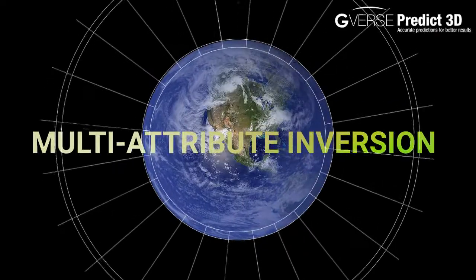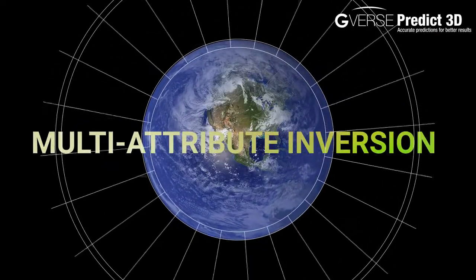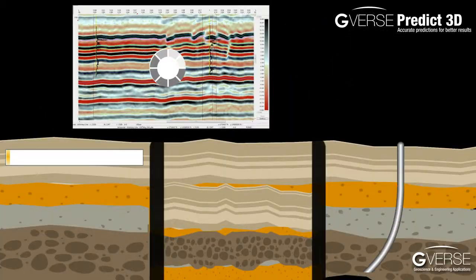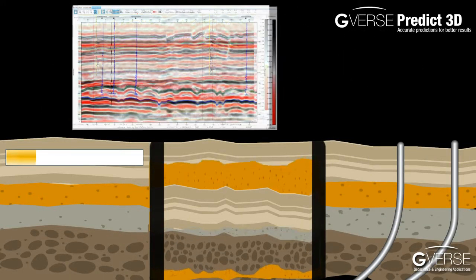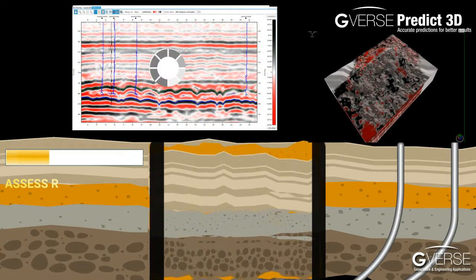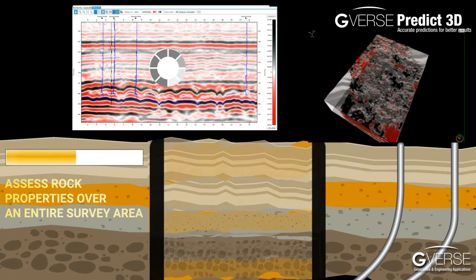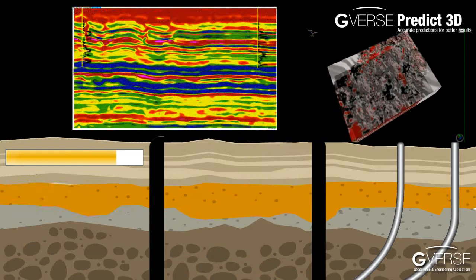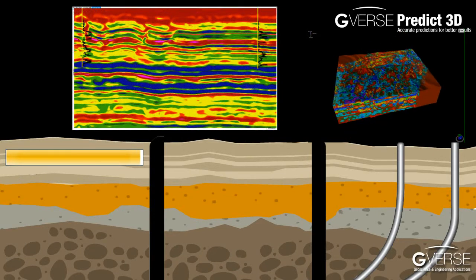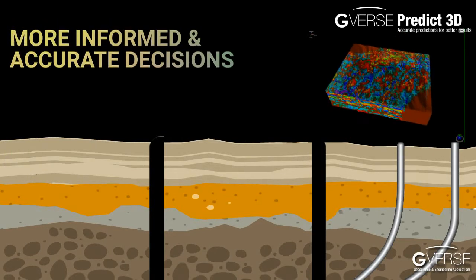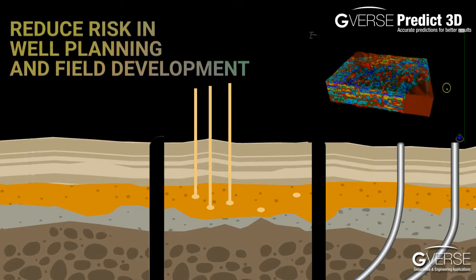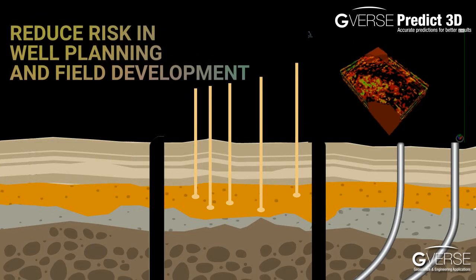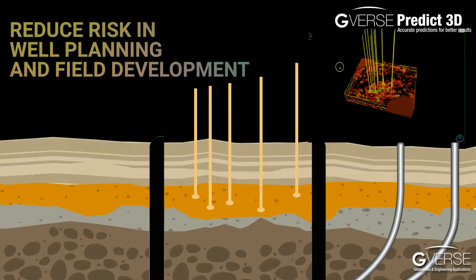G-verse Predict 3D is a multi-attribute inversion solution based on spectral decomposition and state-of-the-art optimization techniques to predict rock properties away from wells using well logs and seismic data. This enables you to understand the reservoir effectively and reduces risks associated with well planning and field development.